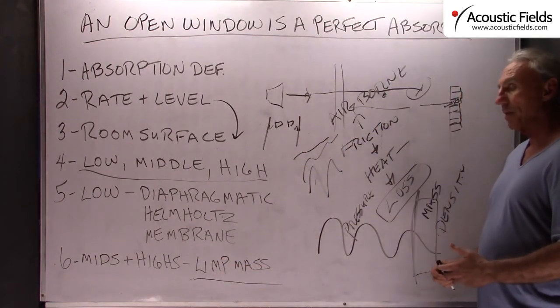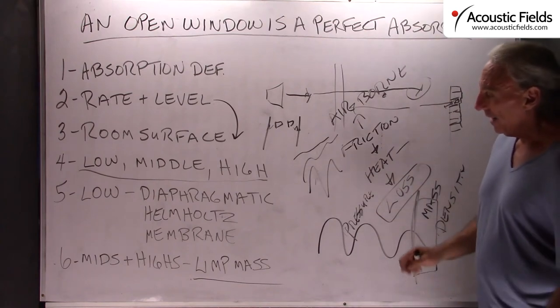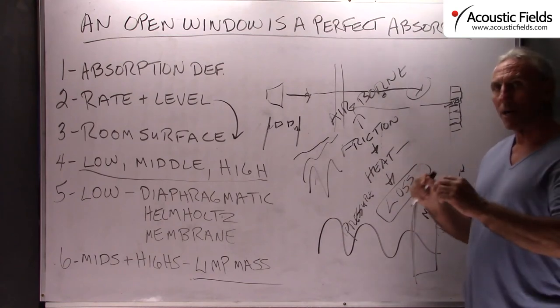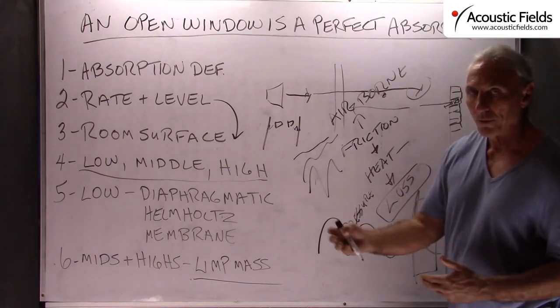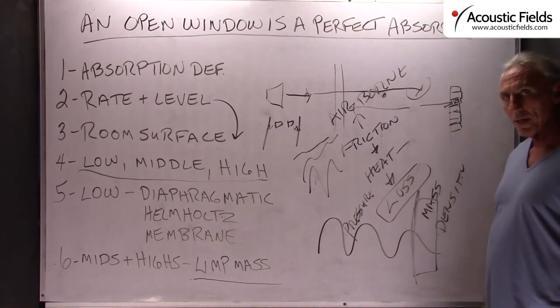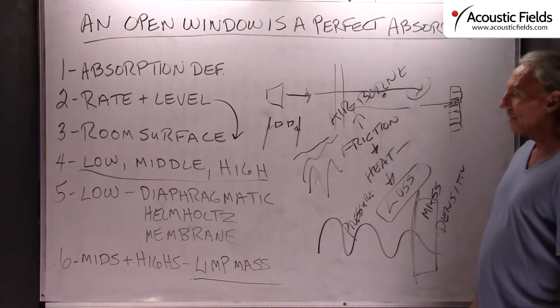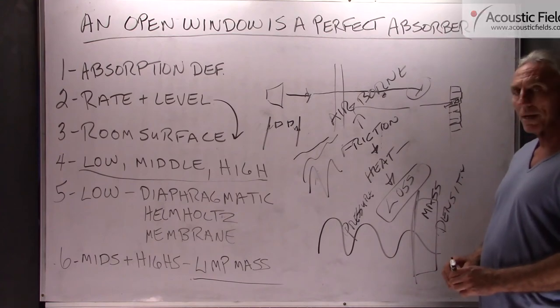The mids and highs we usually control with lint mass materials. Your foams, your - I hate to say this - but building insulations and things like that. Anything that has an impact on molecular velocity as the molecules of the air move through the lint mass material create the friction, create the heat which makes the energy transform. So completely different energies, completely different techniques, and absorption is a real popular technology that we use today constantly.